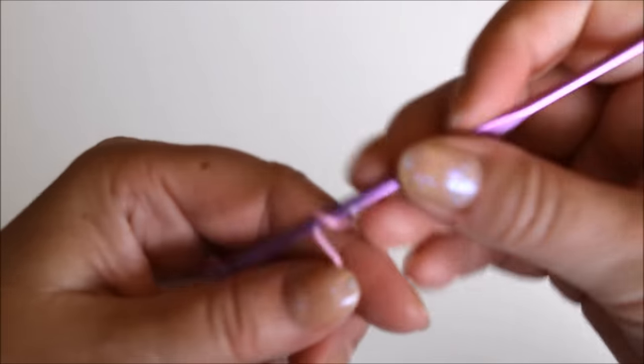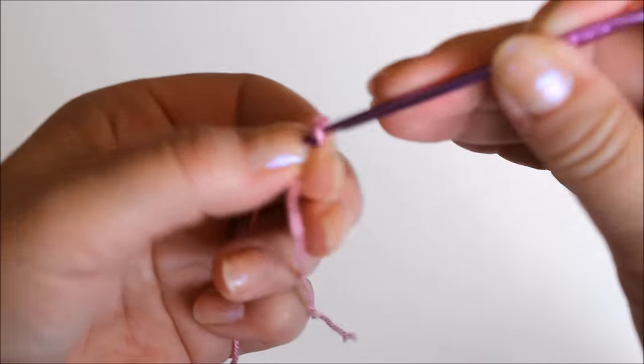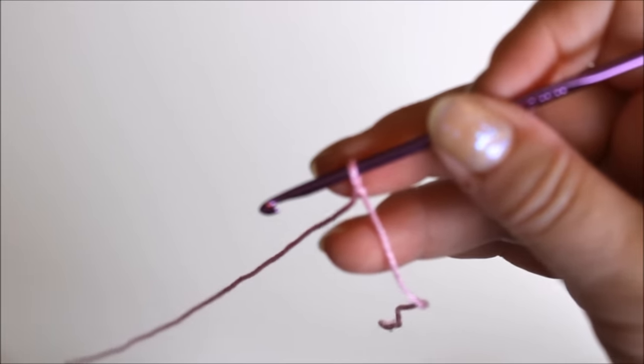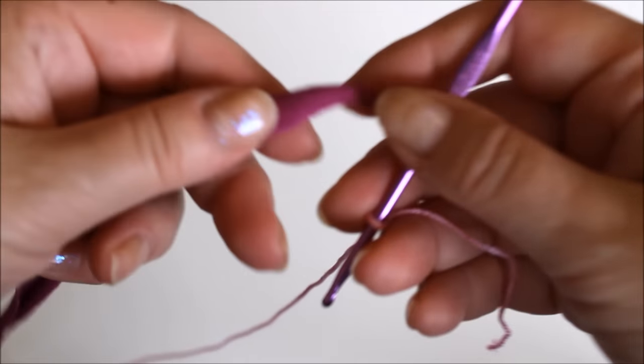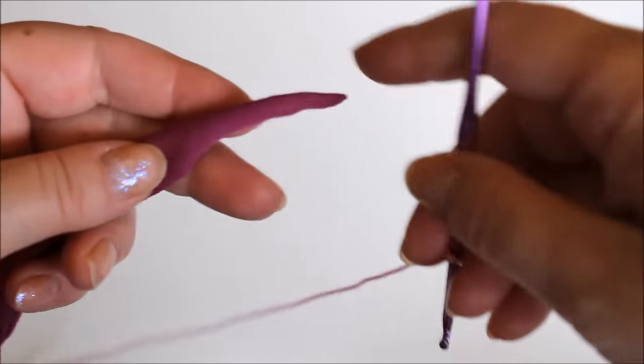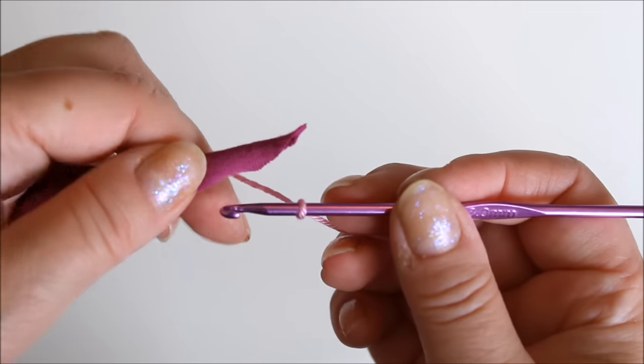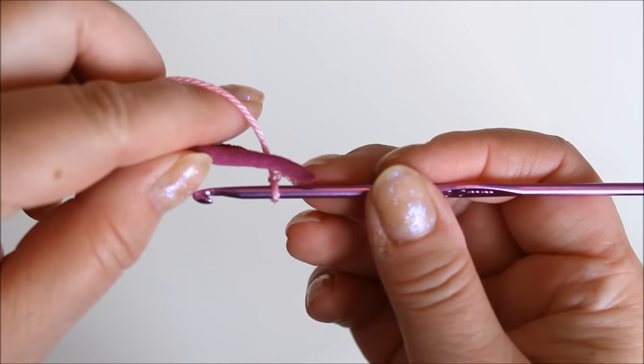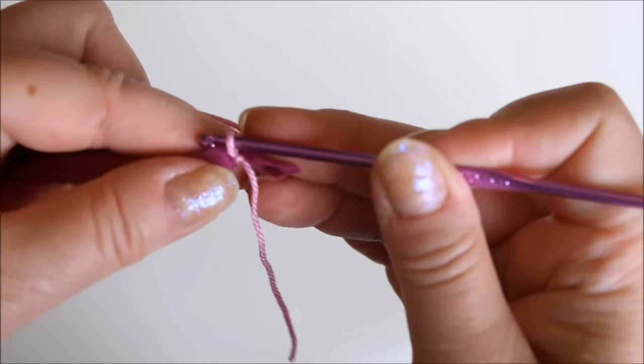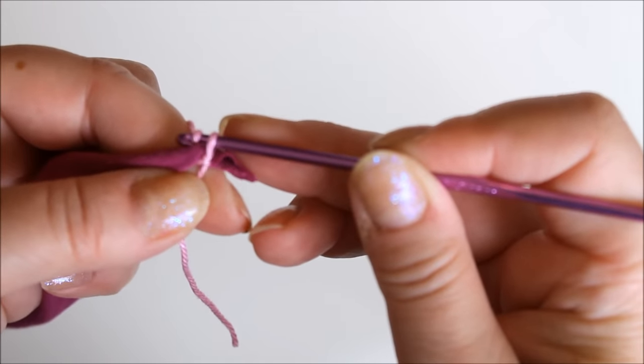We start by making a stitch, and here's the start of the t-shirt yarn. I have cut it sort of tapered in. Then you start crocheting around the t-shirt yarn. The cotton yarn goes under the t-shirt yarn and you need to make the first single crochet close to the tip of the t-shirt yarn.